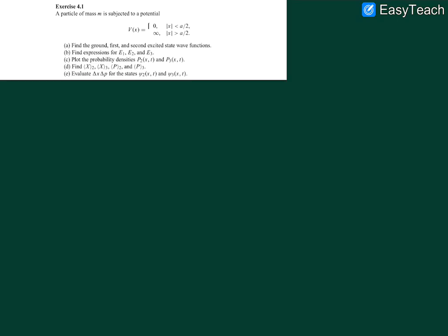Let us start with the first question of chapter 4 from Griffiths. The question is of a symmetric potential well where the potential is given as V(x) = 0 from -a/2 to a/2, and infinity otherwise. We have to find the ground state, first excited state, and second excited state of the wave function, and then find the expressions for E1, E2, and E3.